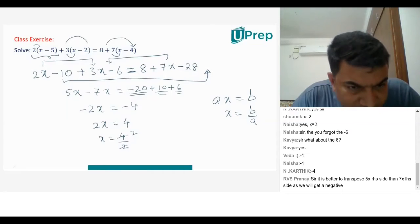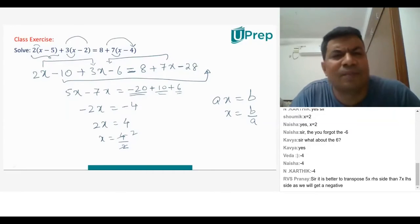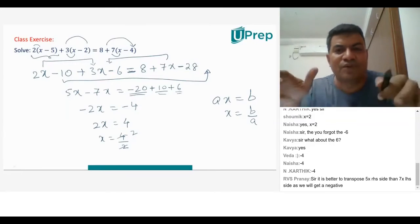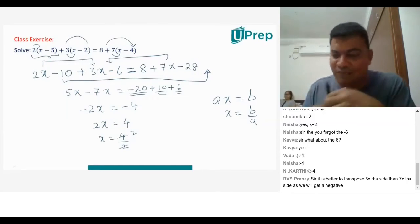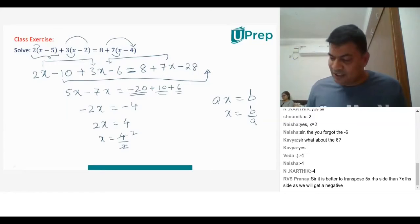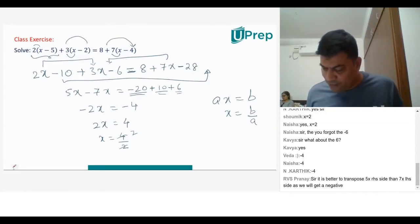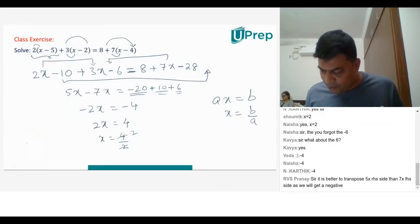It is better to transpose 5x to the left side than 7x to this side as we will get a negative number. It doesn't matter whether you do it on this side or that side as long as you are comfortable with the fraction. Smart students who want to do it fast, let me do it for you in a different way — the same problem.